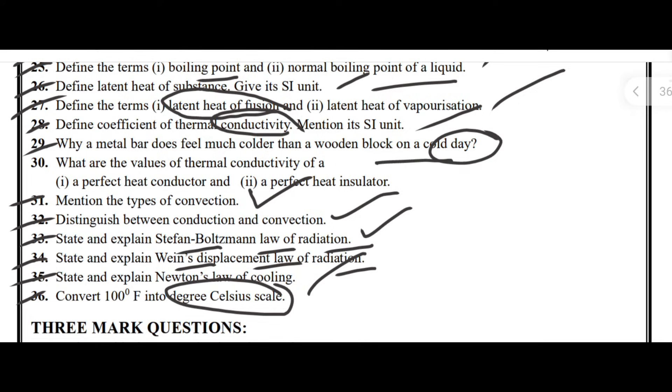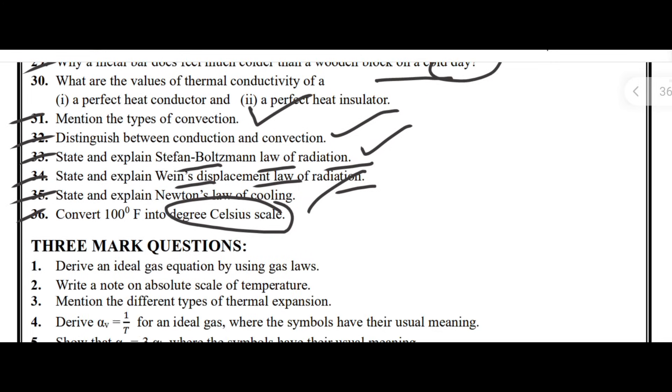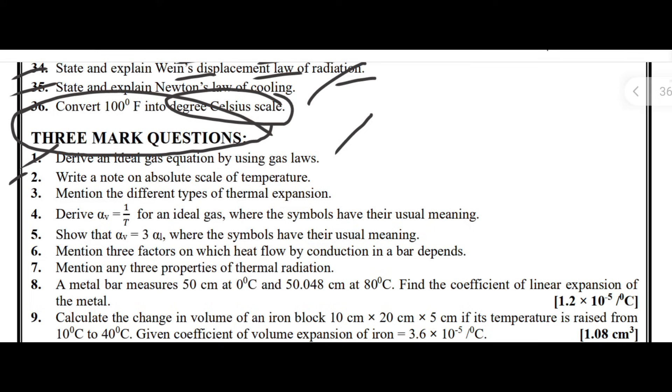Next, I will move to the three-mark type questions. The important questions are: first one, derive an ideal gas equation by using gas laws. Next one, write a note on absolute scale of temperature. Third one, mention the different types of thermal expansion. Next one, derive alpha V equal to 1 by T for an ideal gas, where the symbols have their usual meaning.